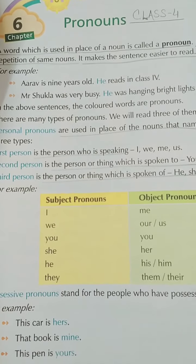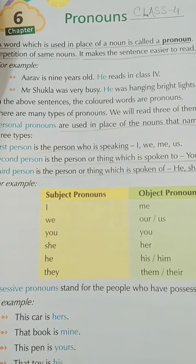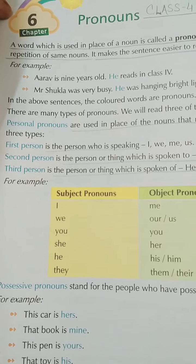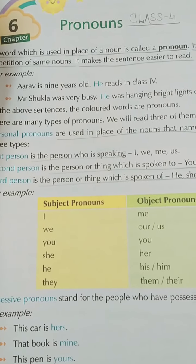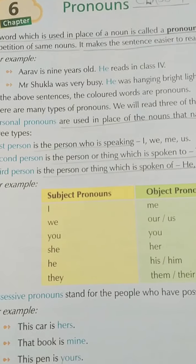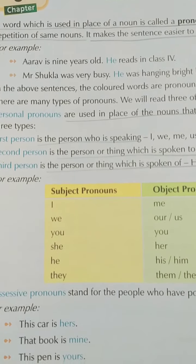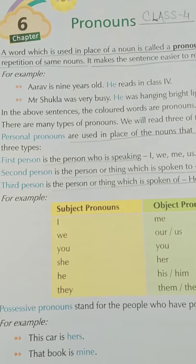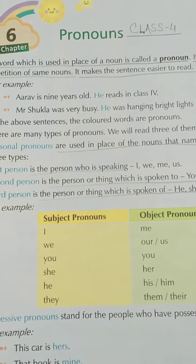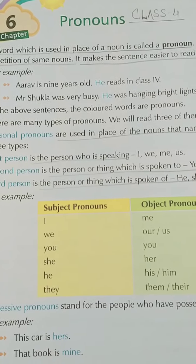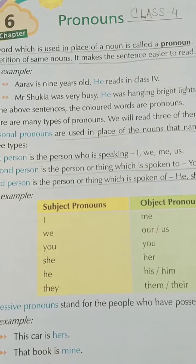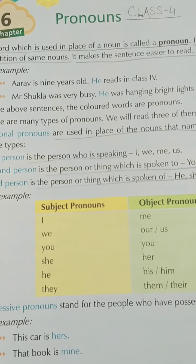A word which is used in place of a noun is called a pronoun. It helps in avoiding the repetition of nouns and makes the sentence easier to read. For example, Aurof is nine years old — he reads in class four. So in place of 'he', if you write 'Aurof', then you have to take the name two times.